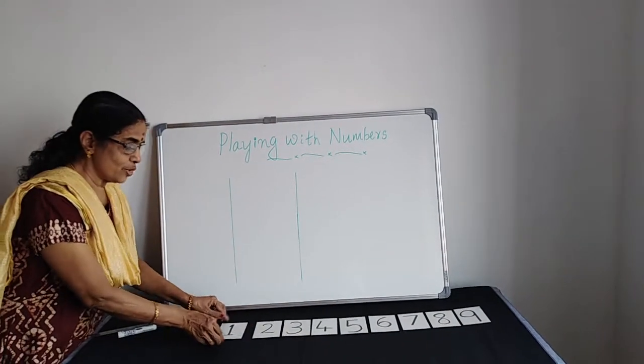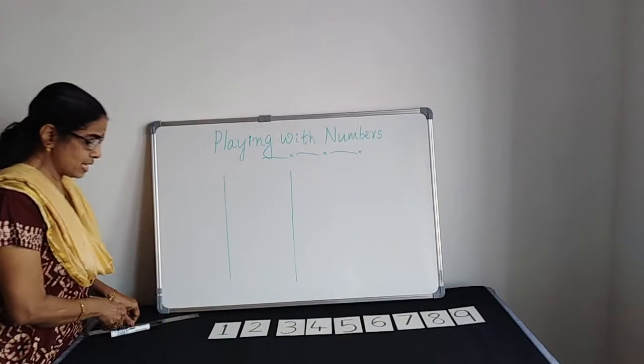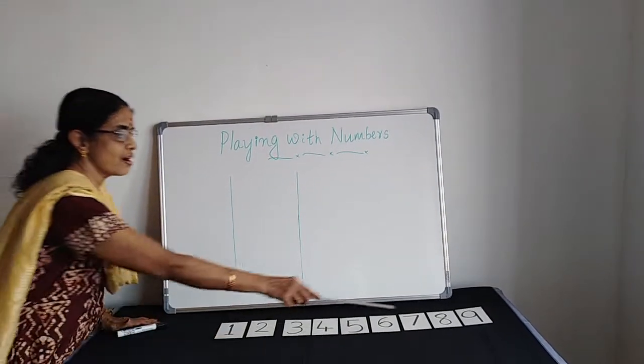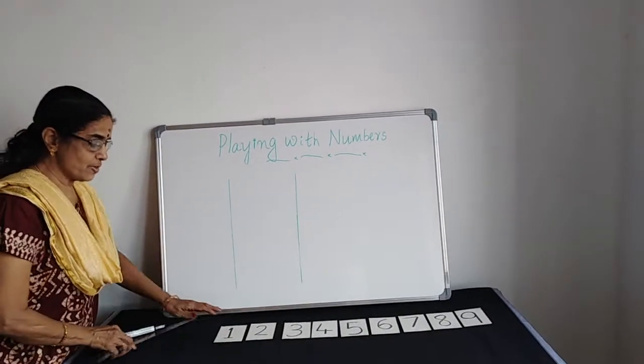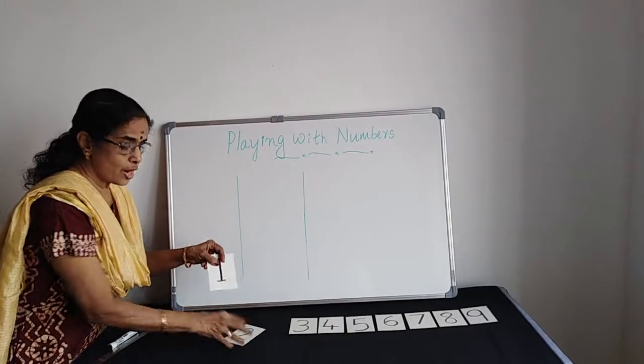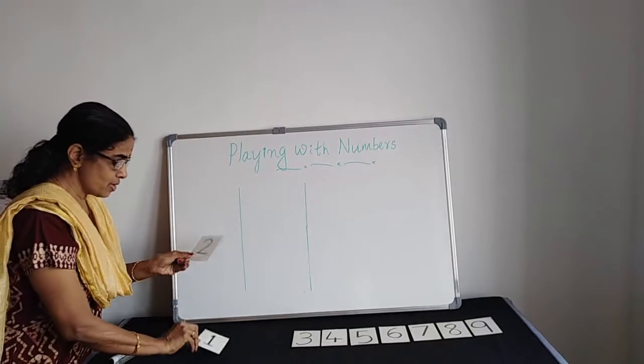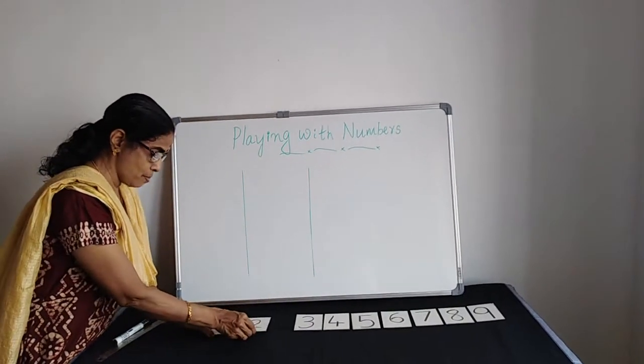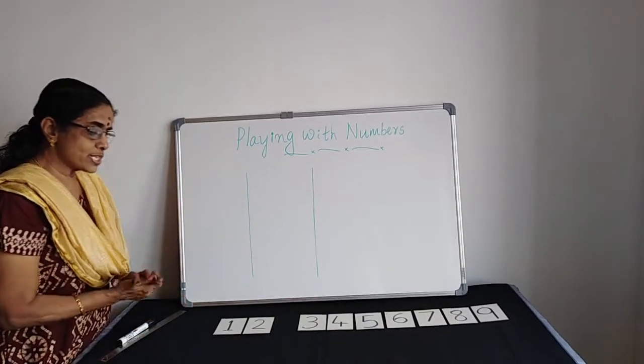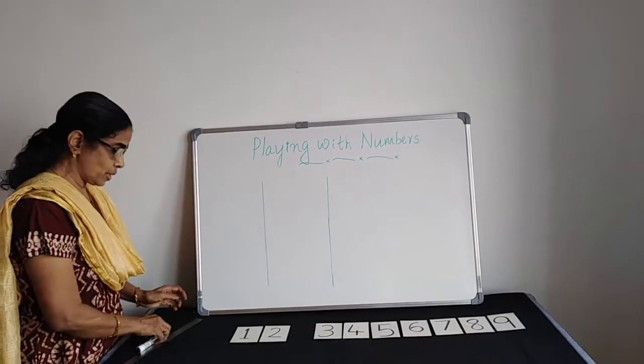We are going to take, what we need? We need 1 to 9 cards. First we will take 2 cards, 1 and 2. We are going to take 2 cards and we are going to make 2 digit numbers. Here we are not supposed to repeat the digit.